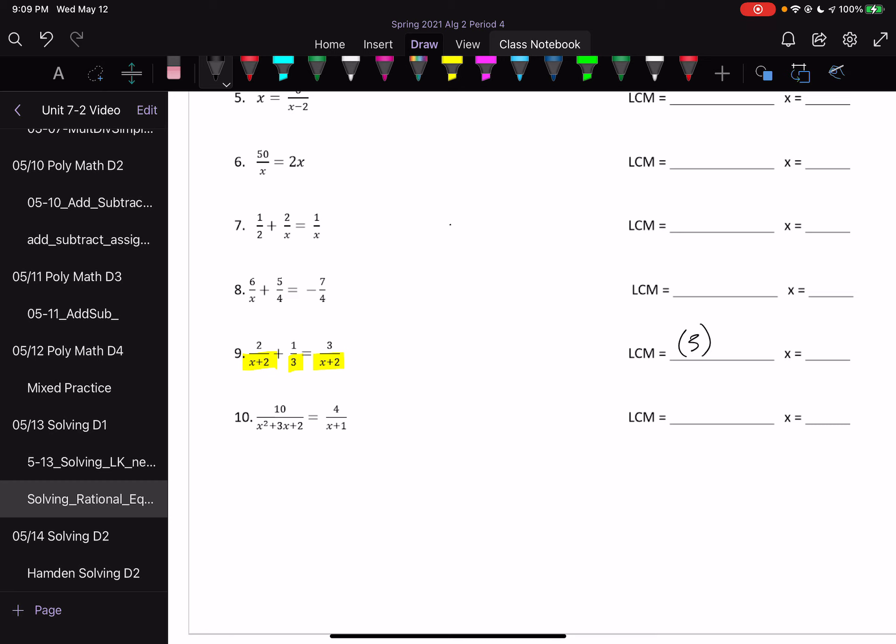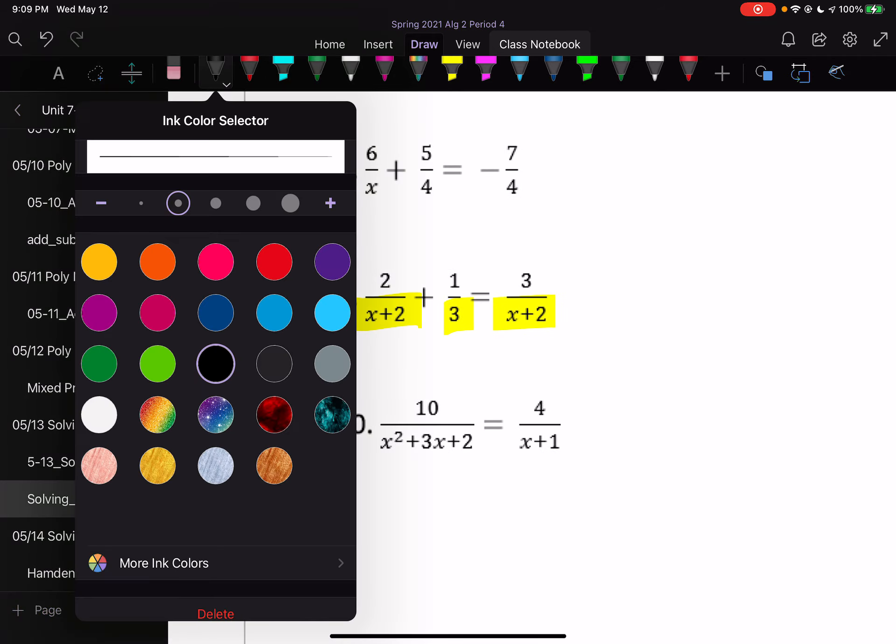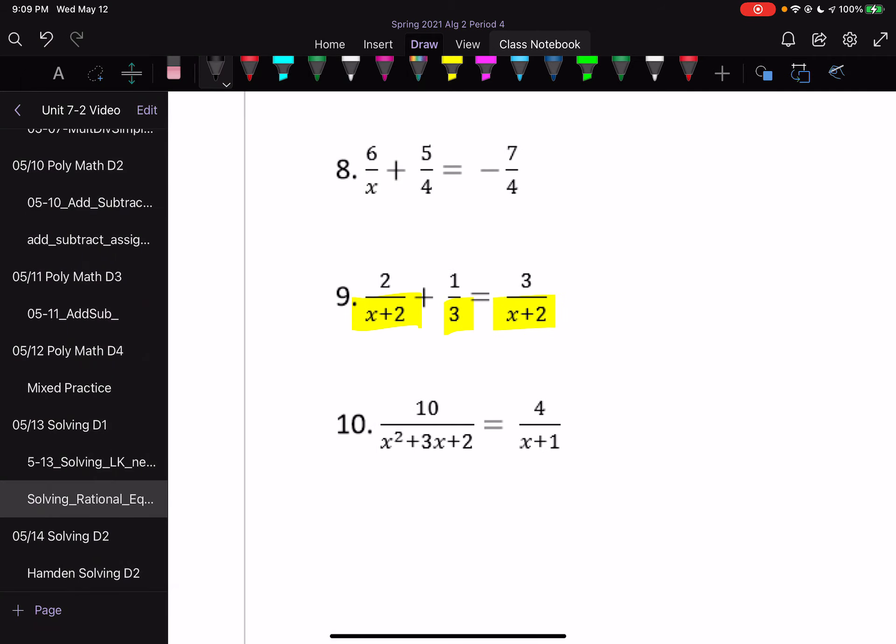So our least common multiple is 3 times x plus 2, so I will multiply everything by that. I'm just going to zoom in to save myself the time and put on this thing x plus 2 times 3 on every single term.